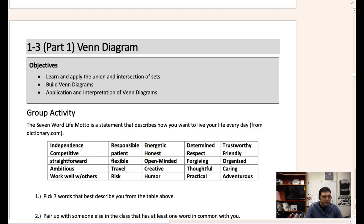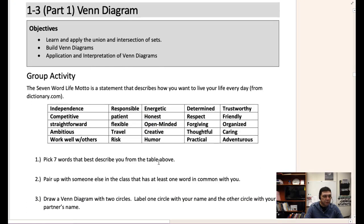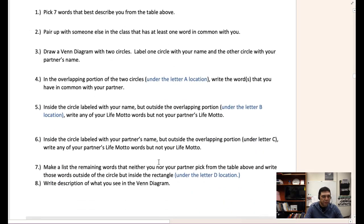1-3 Venn diagrams. The first activity in your lesson book is a group activity which we can't do when you're by yourself, so we're going to go ahead and skip that part.